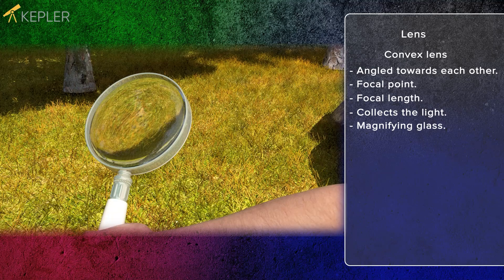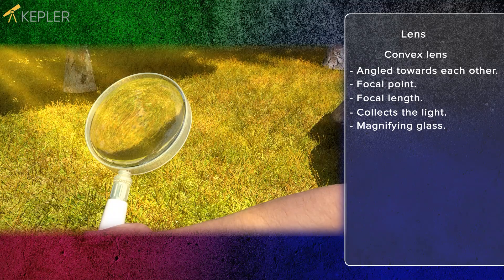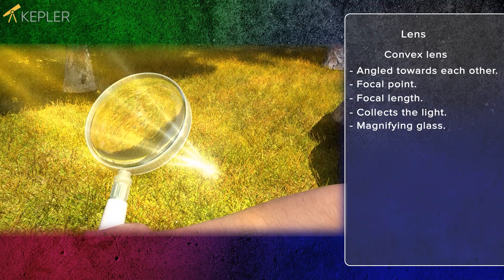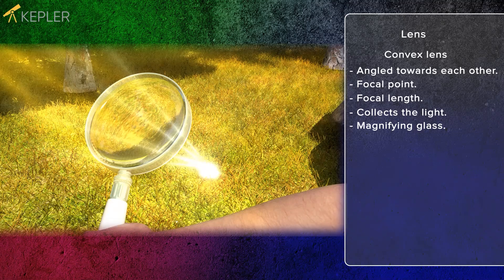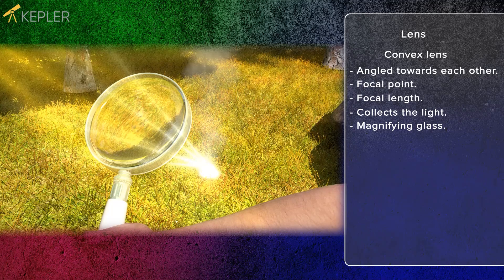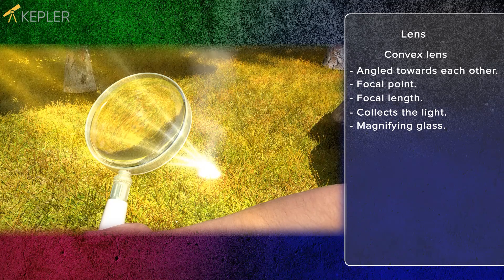In the lens, the rays change direction until they meet at the focal point. This is where the light is concentrated, and if sunlight hits the lens, it can get very hot. It can even get so hot that it can start to burn.